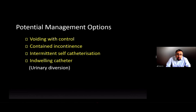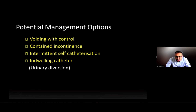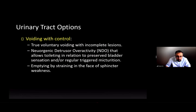Broadly speaking there are four potential management options: voiding with control, contained incontinence, intermittent self-catheterization, and indwelling catheter. Urinary diversion is always a potential option but not one taken lightly — it is a last resort. Generally we focus on the other four.